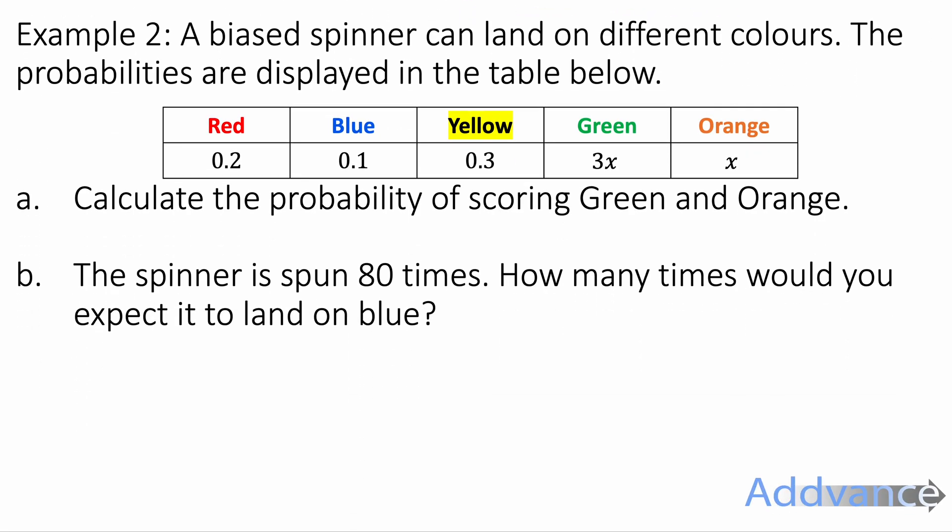Example 2. A biased spinner can land on different colours. The probabilities are displayed in the table below. The word biased here means that it has a better chance of landing on certain colours than other colours. Maybe it's weighted in such a way that yellow is a heavier side than the rest of the colours.